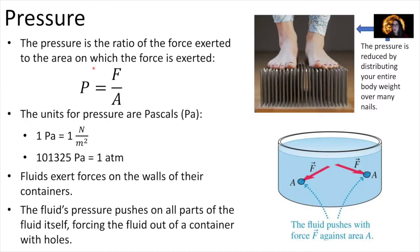Another concept we need to understand is pressure. Pressure is the ratio of the force exerted to the area over which that force is exerted — pressure equals force over area. The units for pressure are Pascals, abbreviated Pa, named after the scientist Pascal. One Pascal equals one Newton per meter squared. The atmospheric pressure at sea level is one atmosphere, equal to 101,325 Pascals, or 1.01 times 10 to the 5 Pascals.